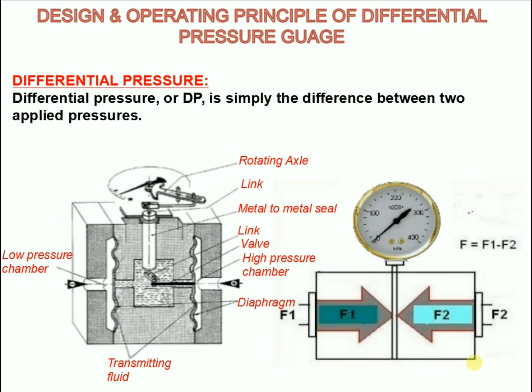Differential pressure gauges are used to measure the flow of a liquid inside a pipe. An orifice plate, venturi, or flow nozzle is often used to reduce the diameter inside a pipe. The differential pressure gauge measures the flow rate by finding the difference in pressure before and after the orifice. Differential pressure gauges are an easy way to get a visual indication of process flow.